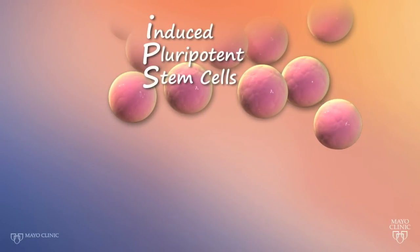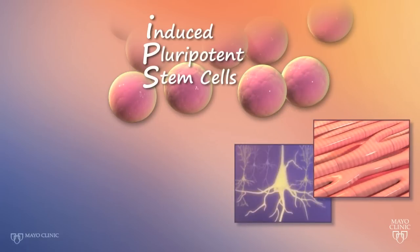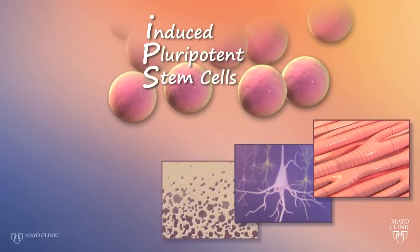The cardiac tissue beats and contracts. Brain tissue communicates between cells and bone tissue forms calcified structures that are genetically identical to the patient that donated the original sample.